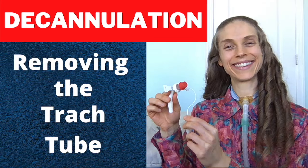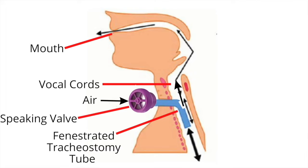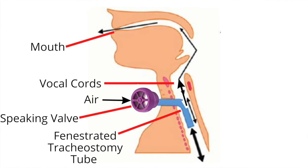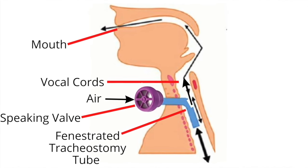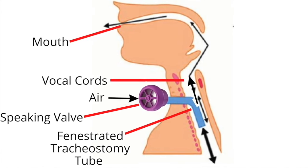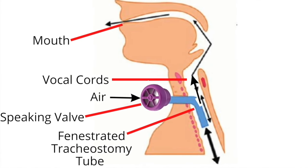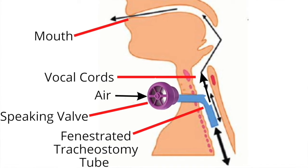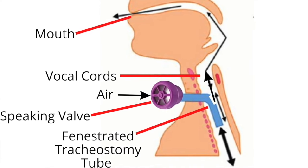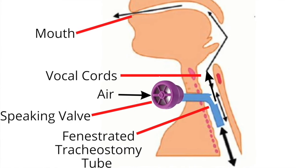For more information about decannulation, please see the video: Decannulation — Removing the Tracheostomy Tube. A fenestrated tracheostomy tube may also be used when a speaking valve is needed. The holes in the fenestrated tracheostomy tube allow for more air to be pushed up the airway and through the vocal cords, helping the person produce speech.